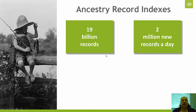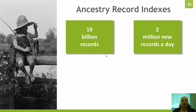We're going to start by talking about how many records there are available on Ancestry. As of today — this is January of 2017 — there are 19 billion historical records available on Ancestry. Every time I say that out loud it blows my mind. I've been with the company now for almost 13 years and Ancestry is adding an average of 2 million new records every single day.